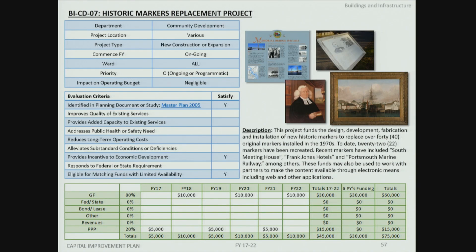The historic marker replacement project has been a Community Development Department initiative for approximately eight years, replacing about 45 1970s-era etched metal plate markers throughout the downtown and surrounding neighborhoods. This work is typically funded on an every-other-year basis; no new funding is requested this year, though the city is always looking to leverage neighborhood involvement and interest from other organizations.